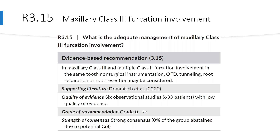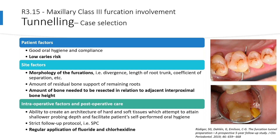In the next guideline, the authors state that in maxillary class 3 and multiple class 2 furcation involvement in the same tooth, non-surgical instrumentation, open flap debridement, tunneling, and root separation or root resection may be considered. Again, this is an open recommendation, supported by only 6 observational studies with low quality of evidence. Focusing on tunneling, important factors for case selection include patients with low caries risk; site factors such as furcation morphology, divergence, length of root trunk, and coefficient of separation; the amount of residual bone support; and the amount of bone needed to be resected in relation to adjacent interproximal bone height.